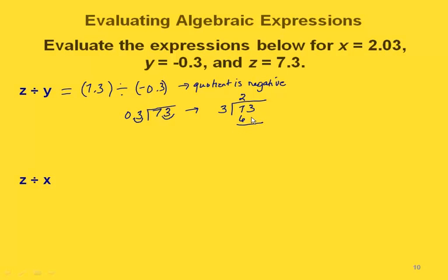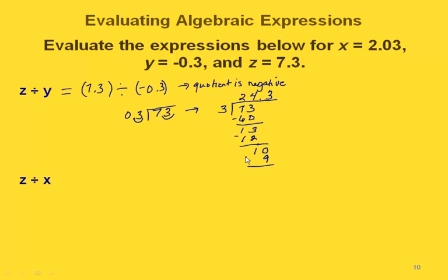Three goes into seven twice. That gives us sixty, and subtracting we get thirteen. Three goes into thirteen four times, four times three is twelve, subtracting leaves one. We carry this out to the tenths place so we can round to the nearest whole number. Adding a zero, three goes into ten three times, three times three is nine, leaving one again. We've taken this to the tenths place. Rounding to the ones place gives us just 24.